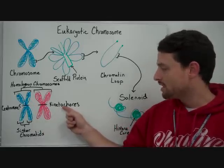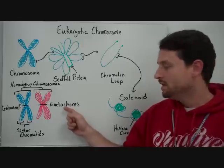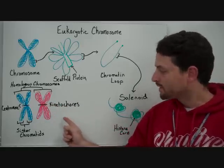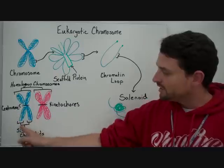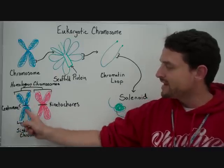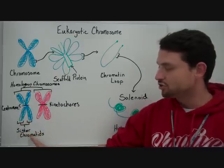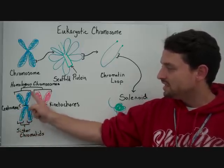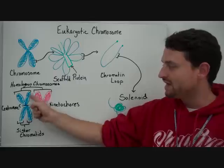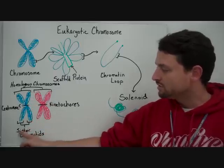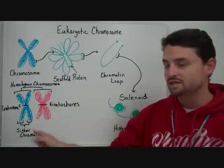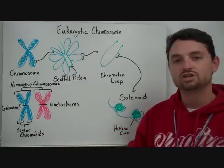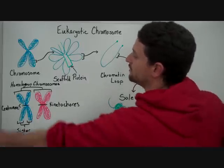That kinetochore protein will be essential later on. This chromosome is made up of sister chromatids — this is the DNA, and this is an exact copy of that piece of DNA. Sister chromatids are connected at the centromere, and that gives us that X shape for the homologous chromosomes.